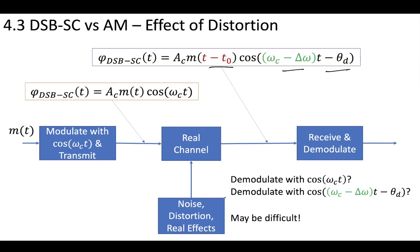So ideally we would demodulate with the exact signal that came out of the transmitter. However, due to the real channel effects, we may need to demodulate with something different. So we need to have some other cosine carrier wave that matches exactly whatever the real channel just did to it.